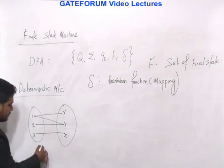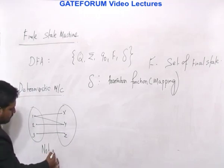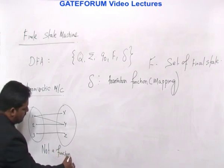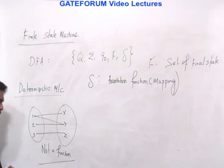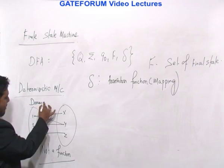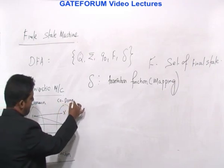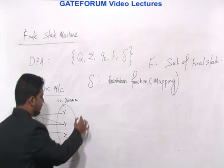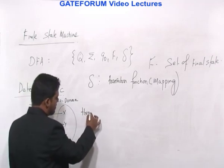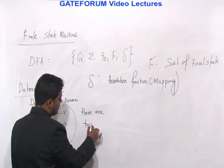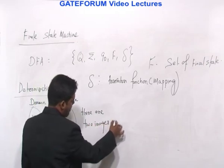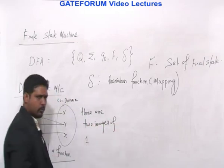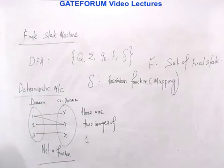This is not a function. Why is it not a function? Because 1 has two images — there are two images assigned to the element 1. So this is not a function.